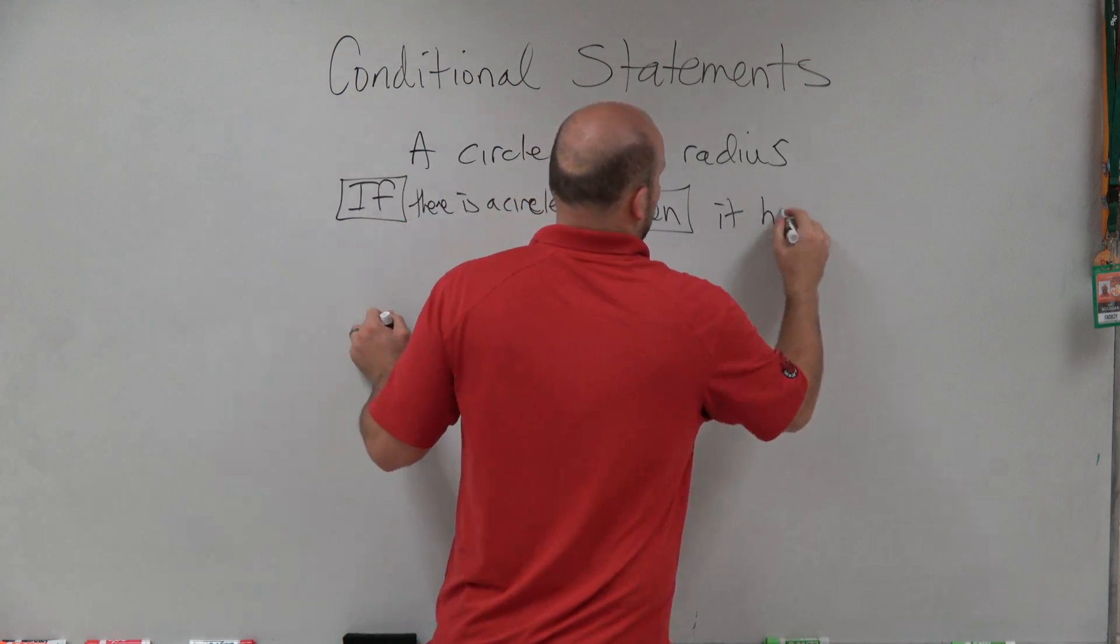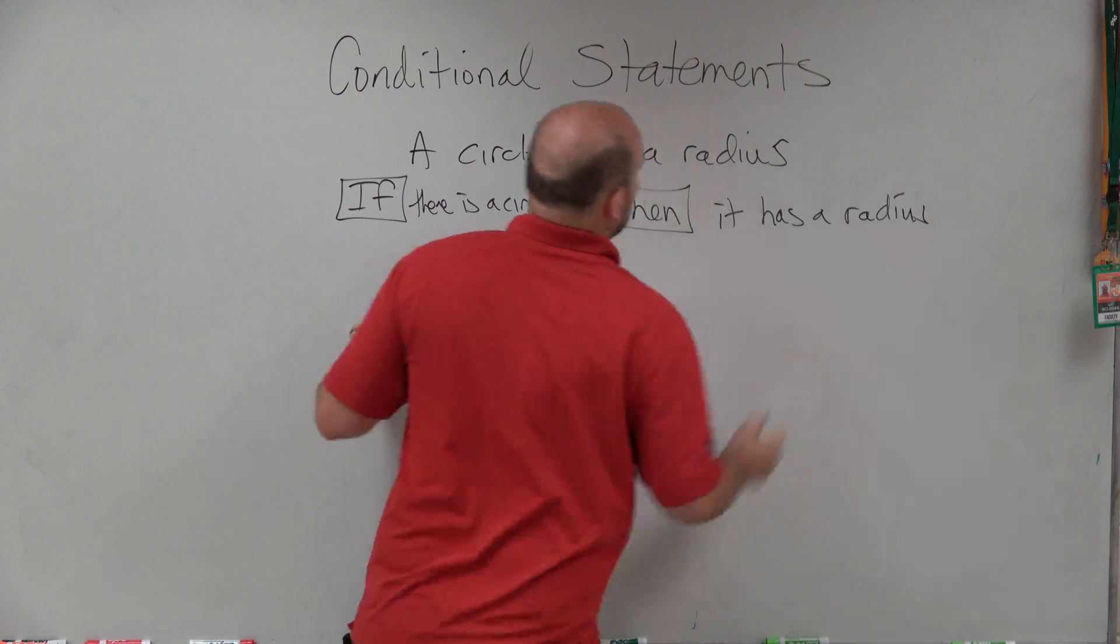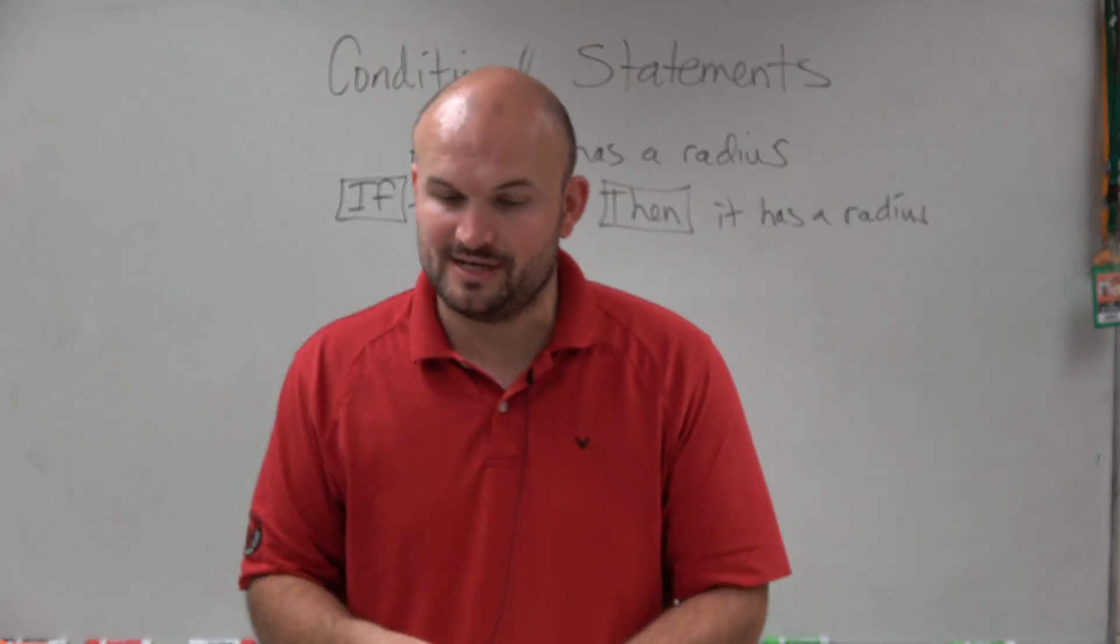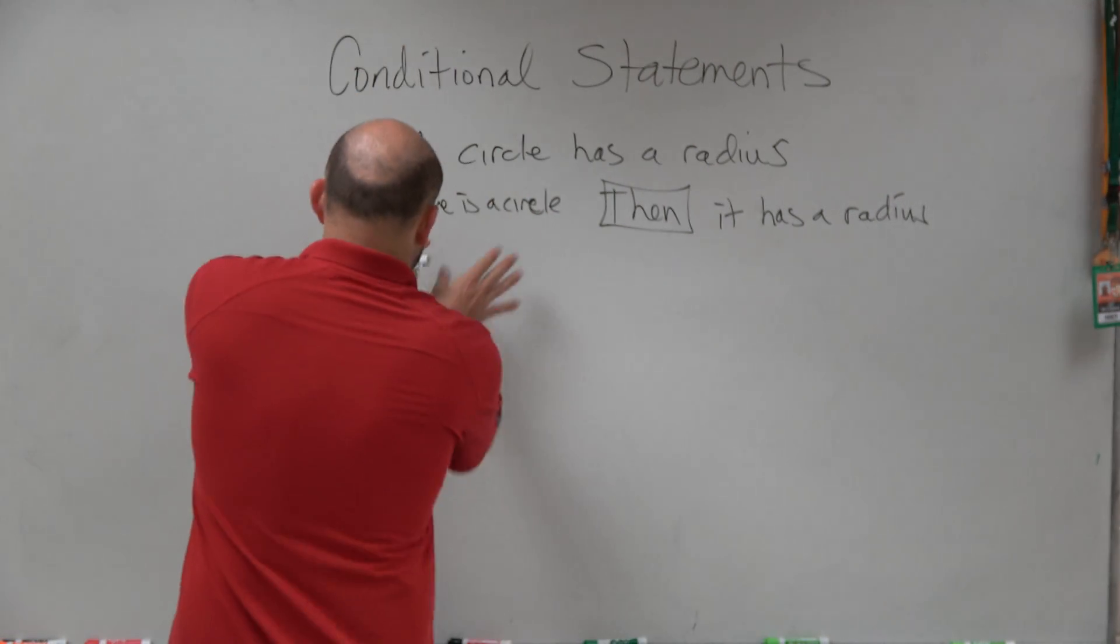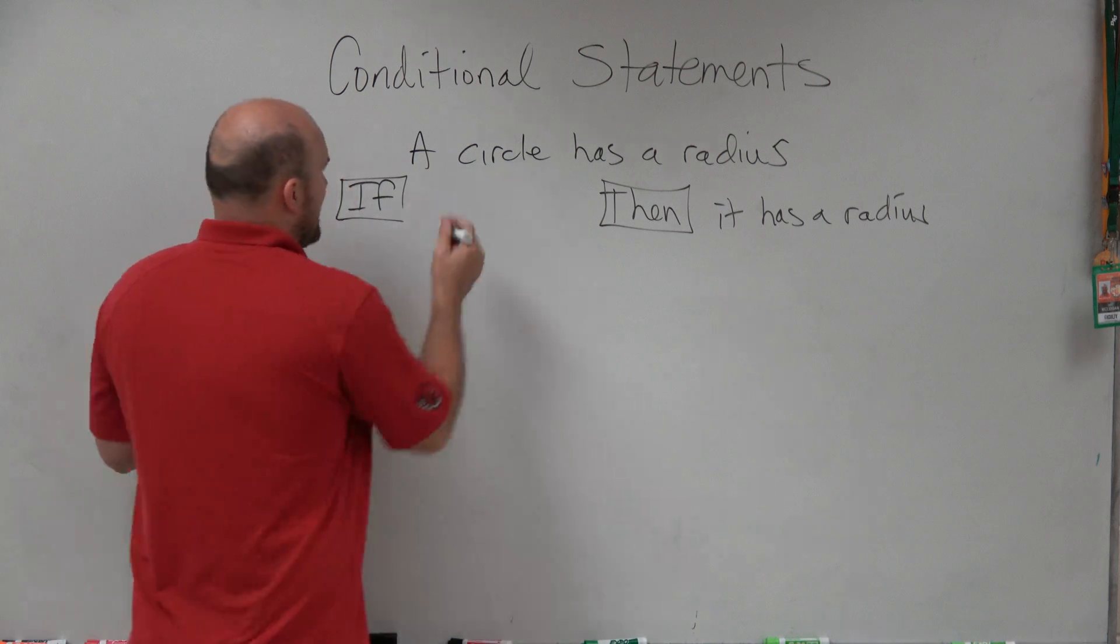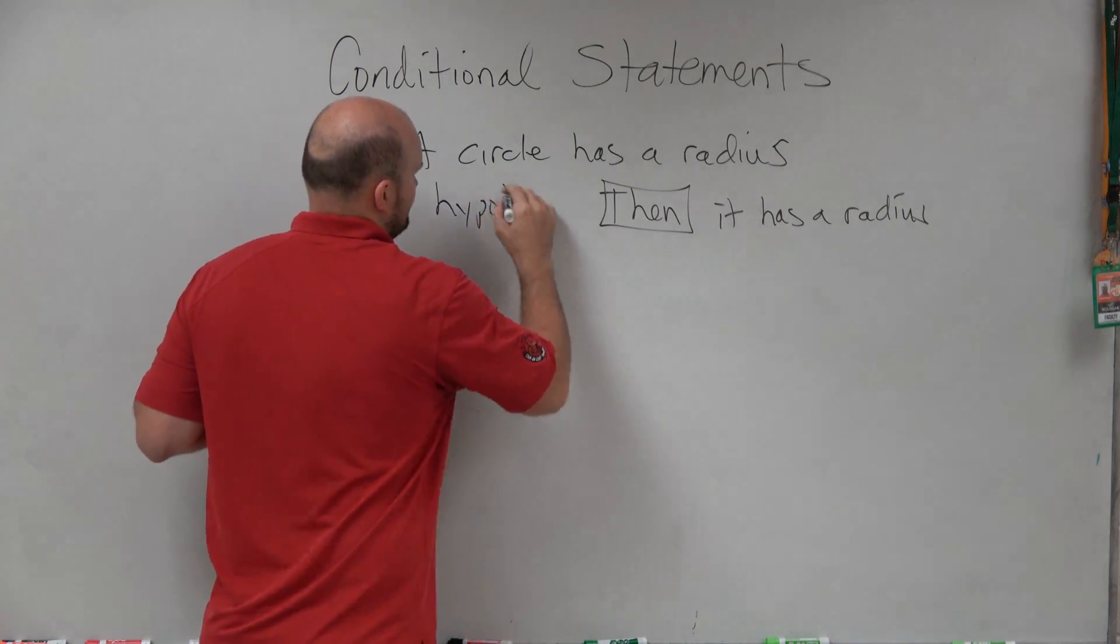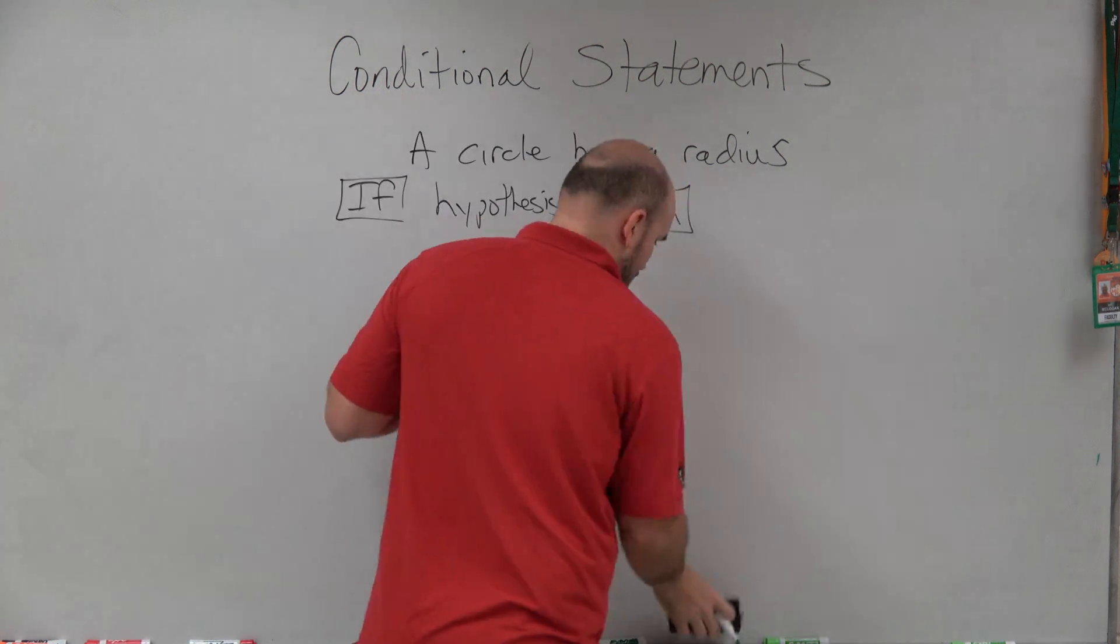...then it has a radius. What you have is an if-then statement. The 'if there is a circle' part is the hypothesis, and the 'then it has a radius' part is the conclusion.